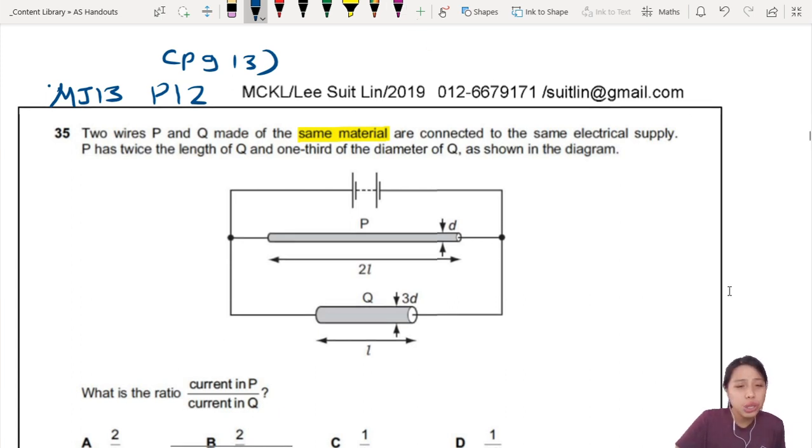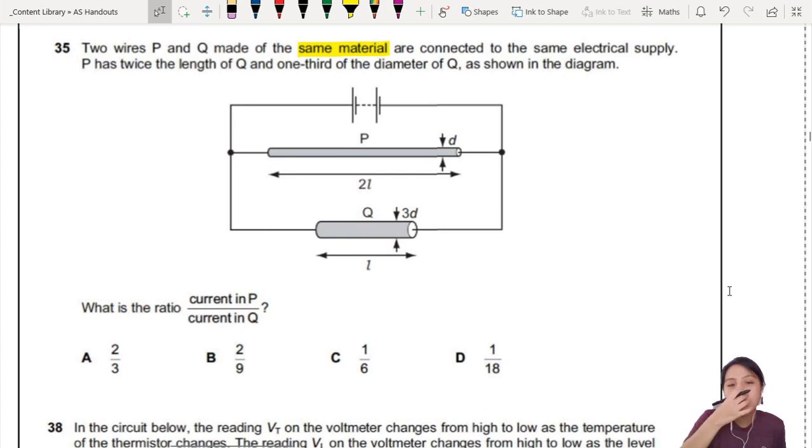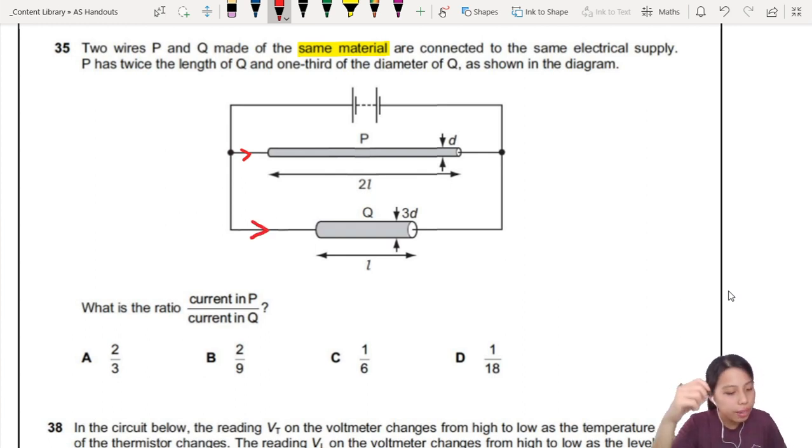What is the ratio of the current in P and the current in Q? So the ratio depends on their resistance, right? Resistance 1, resistance 2. I don't know what that is. But the current will divide accordingly. Here we'll have some different current. Here we'll have some different current.